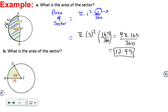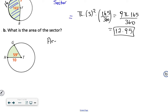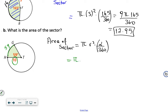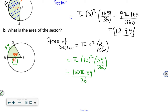Next question: to find the area of the sector, remember the formula — pi times R squared times alpha over 360. The radius of the circle is 10 and the measure of arc is 59 degrees. Substituting: pi times 10 squared times 59 over 360. 10 squared is 100, so pi times 100 times 59 over 360, which gives 5900 times pi over 360, equal to approximately 51.48. This is the area of the sector.